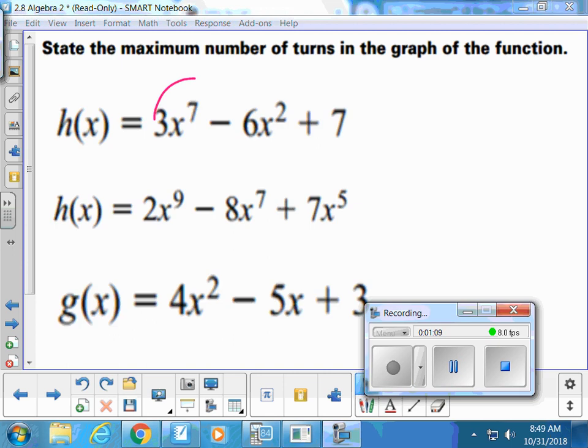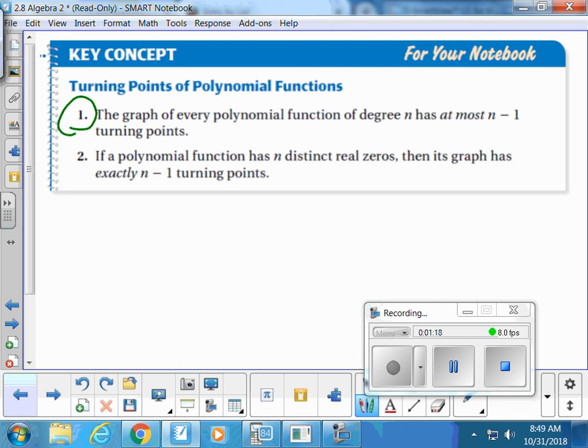I'll show you this rule real quick: the graph of every polynomial function of degree n has at most n minus 1 turning points. We're gonna put that idea into play.